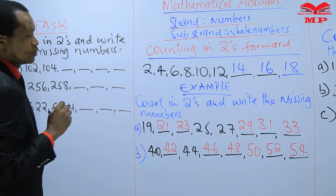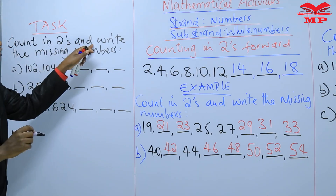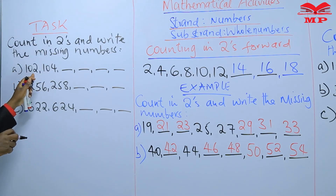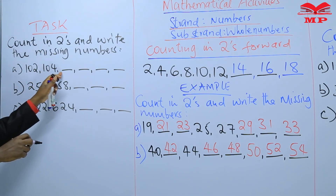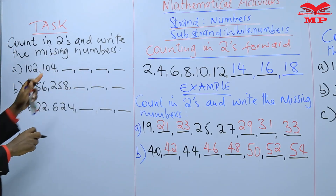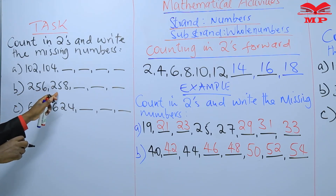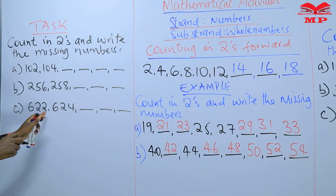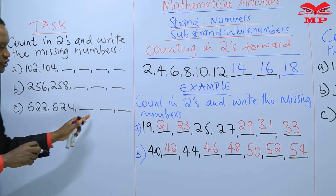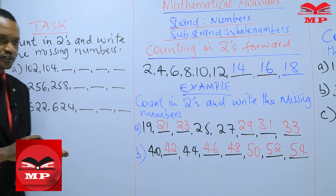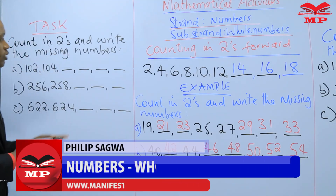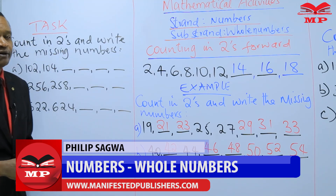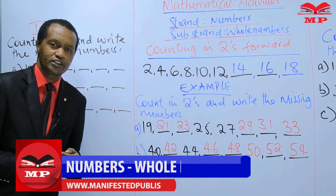Count in twos and write the missing numbers. A: 102, 104, ___, ___, ___, ___, ___. B: 256, 258, ___, ___, ___. C: 622, 624, ___, ___, ___, ___. Please do the work, then you can come back and we continue studying mathematical activities. Bye bye.